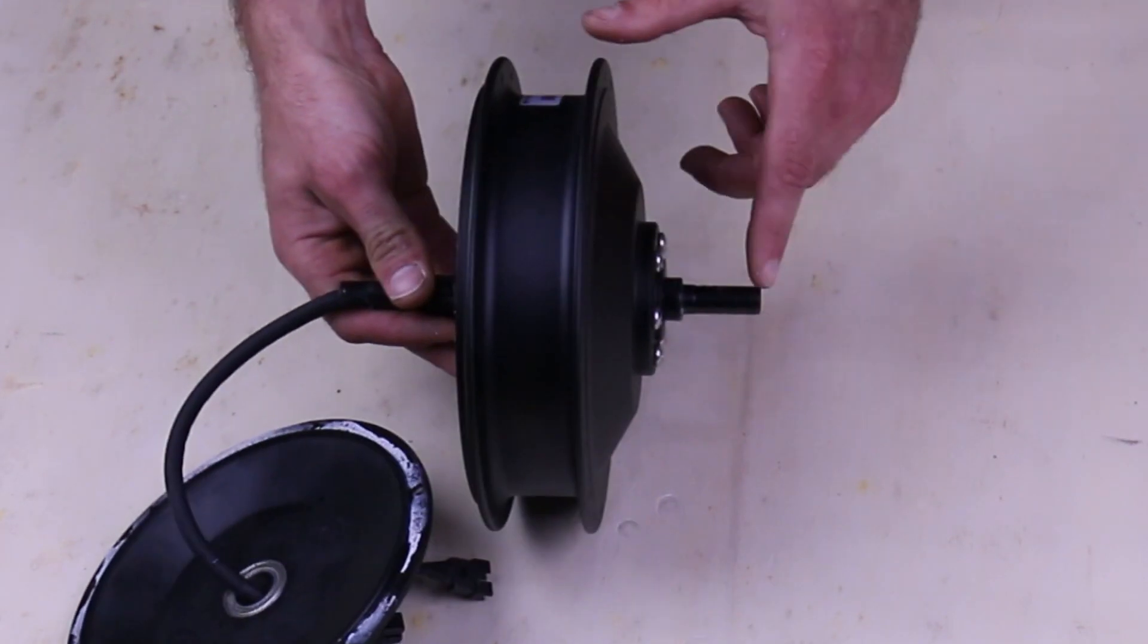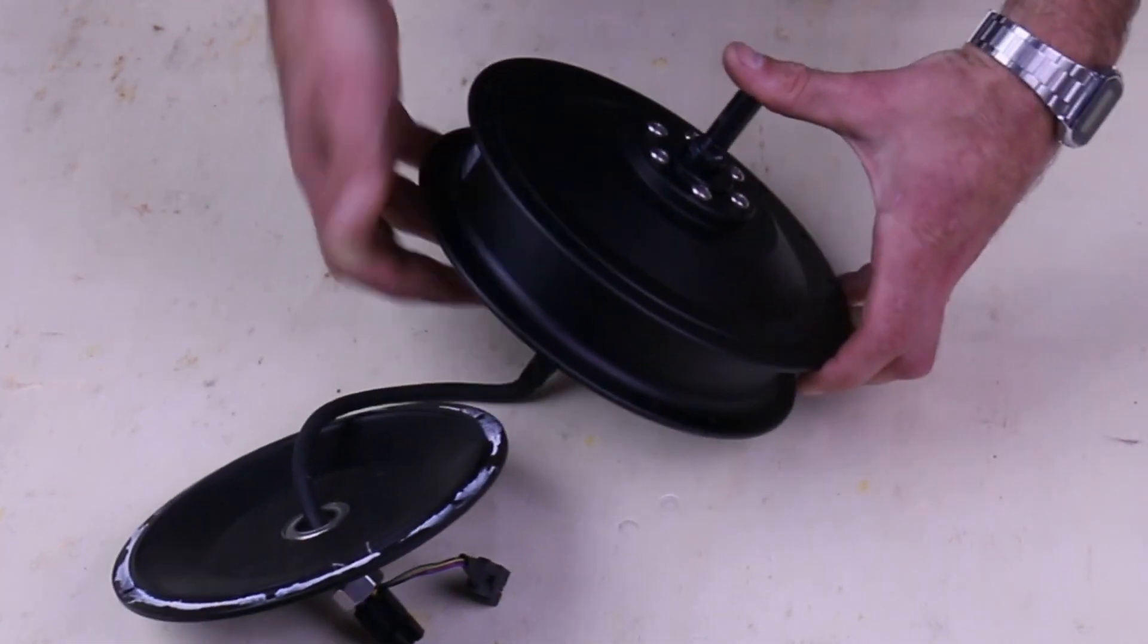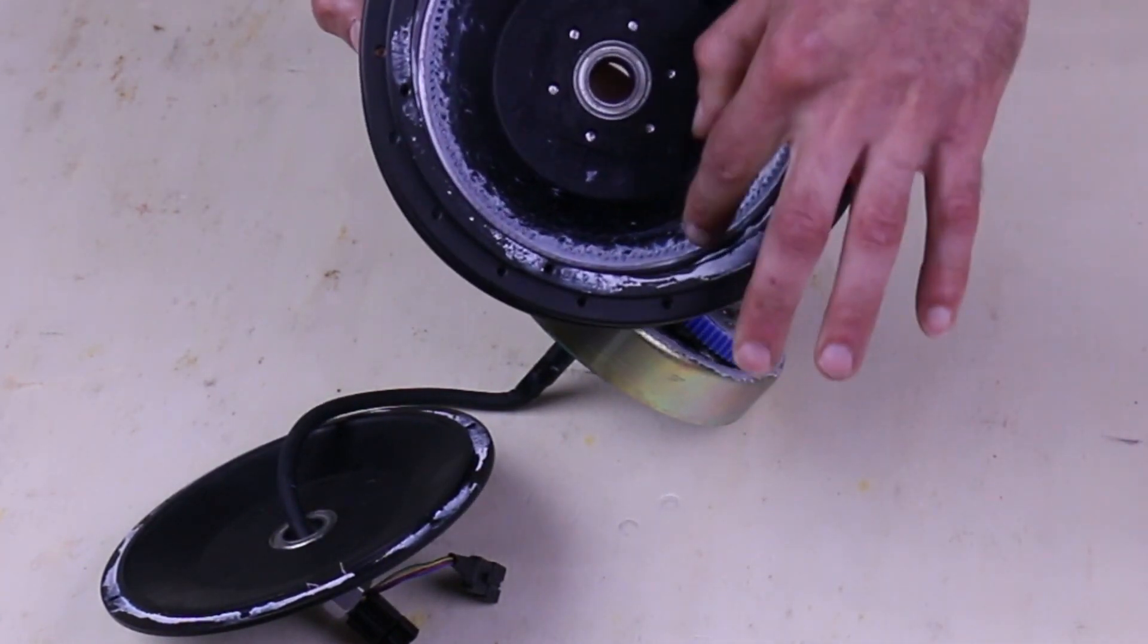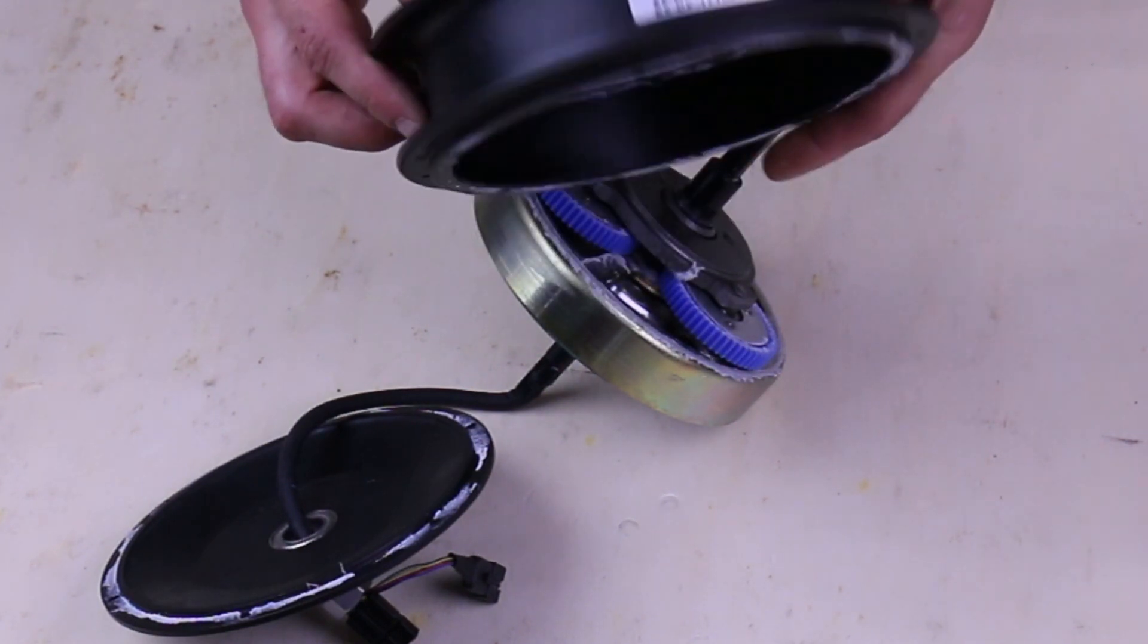If you've removed the nut from the disc side of the motor, you should be able to just pop the motor out of the shell. Inside, we can see the ring gear and the other bearing. If that needs to be serviced, you can easily pop this out and service it.